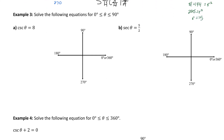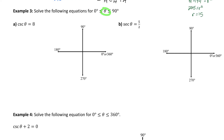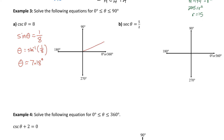Let's solve a couple of trig equations that involve reciprocal trig functions. Example 3 says to solve the equations for theta, finding only the answer between 0 and 90 degrees — that means only the answer in quadrant 1. Anytime your equation has a reciprocal trig function, we can switch it to the primary trig function. So instead of cosecant of theta equals 8, I change it: the reciprocal of cosecant is sine, so sine of theta equals 1 over 8. Then the angle equals the inverse sine of 1 over 8, which is about 7.18 degrees — in quadrant 1.